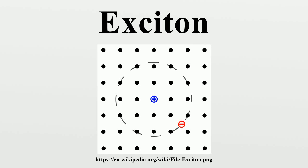The recombination of the electron and hole, i.e., the decay of the exciton, is limited by resonance stabilization due to the overlap of the electron and hole wave functions, resulting in an extended lifetime for the exciton. The electron and hole may have either parallel or antiparallel spins. The spins are coupled by the exchange interaction, giving rise to exciton fine structure.